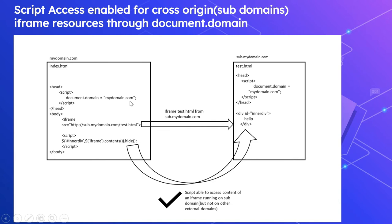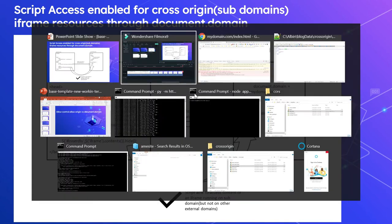Same setup: mydomain.com index.html and sub.mydomain.com test.html. The additional thing here is we are enabling a script that sets document.domain equal to mydomain.com - and the same in the other frame: document.domain equal to mydomain.com. What this does is: while the browser does the origin check, instead of sub.mydomain.com, mydomain.com will be used, so the origin check will pass and the script will be able to access the inner div element from the cross-origin frame.